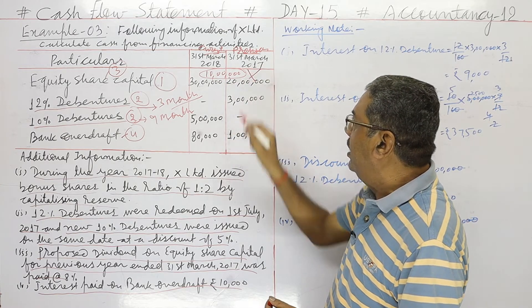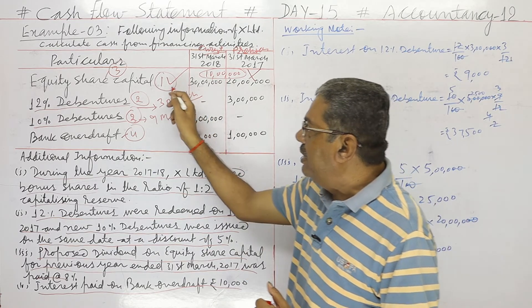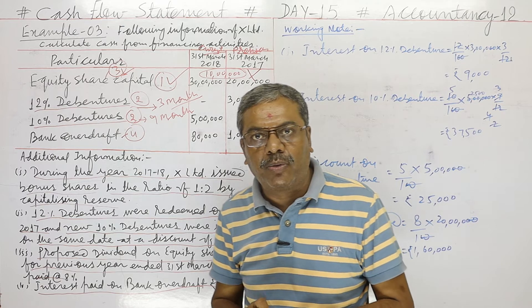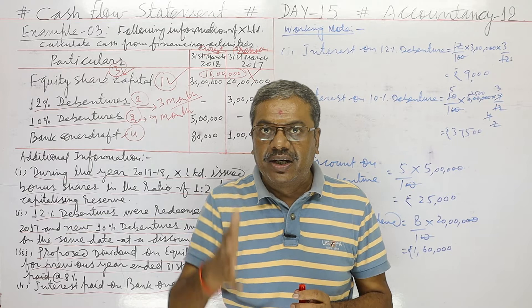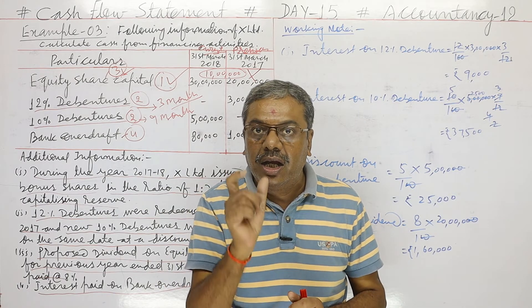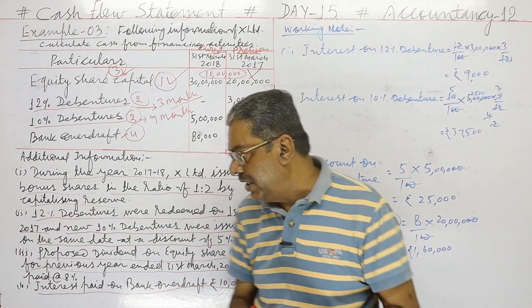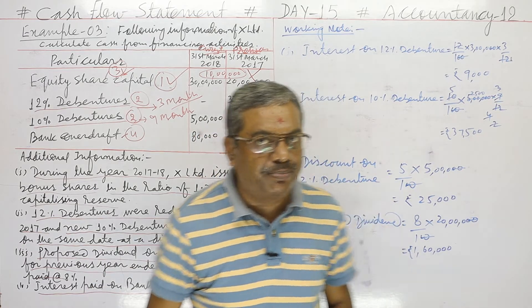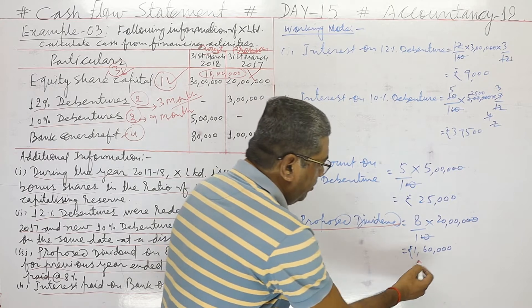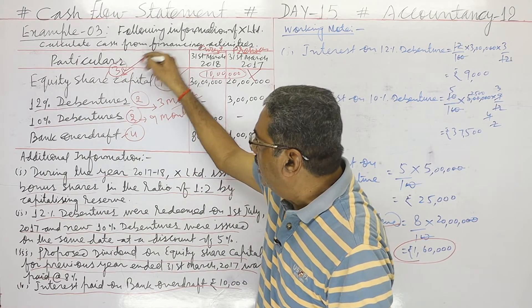Additional information 1 is complete. Now for additional information 3 — proposed dividend. The proposed dividend of the previous year is shown in cash flow from financing activity. Here, the previous year rate is 8%. Working note: Proposed dividend = 8/100 × ₹20 lakhs = ₹1,60,000. This completes additional information 3.